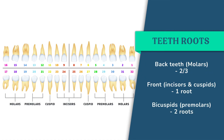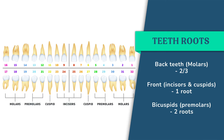Different teeth have different numbers of roots. The anterior teeth — the front teeth — tend to have one root each. The bicuspids have two roots, and the molar teeth going backwards have two or three roots.